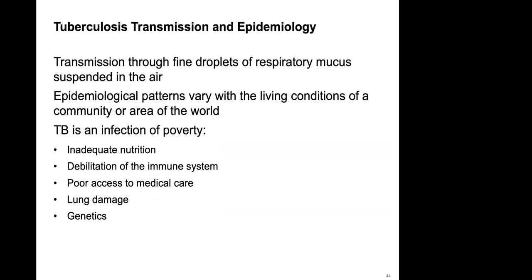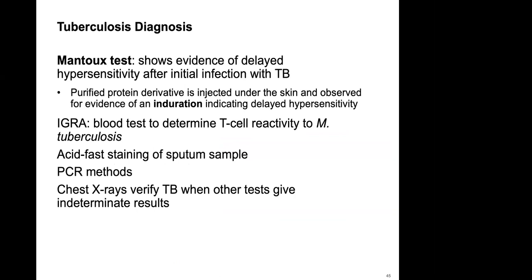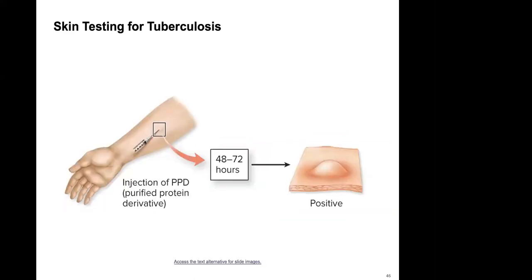The most common test for TB is the PPD (tuberculin skin test) — an antigen is injected and a reaction is observed at 48 to 72 hours, appearing as an inflammatory bump. If you have been vaccinated against TB or have had a prior TB infection (no longer active), you will come back positive on the PPD. Individuals who test positive — whether legitimately or not — are then screened by chest X-ray, which is the only definitive way to assess this.